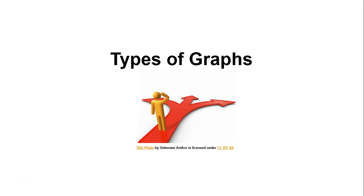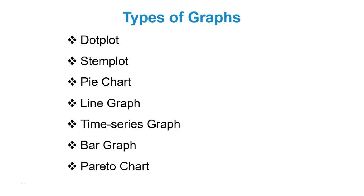Hello, we are now going to discuss types of graphs. There are several different types of graphs that can be used to visually represent data. This includes but is not limited to dot plots, stem plots or stem and leaf plots, pie charts or circle graphs, line graphs, time series graphs, bar graphs, and Pareto charts.